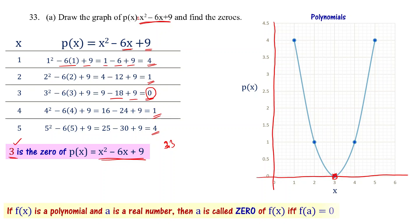The definition of zero of a polynomial: if f(x) is a polynomial and 'a' is a real number, then 'a' is called the zero of f(x) if and only if f(a) = 0. When you substitute 'a' in place of x and get f(a) = 0, then 'a' is called the zero of that particular polynomial.